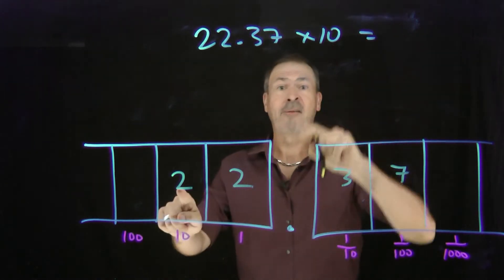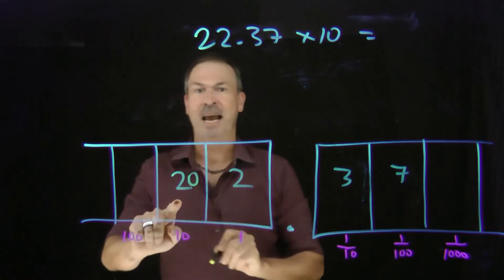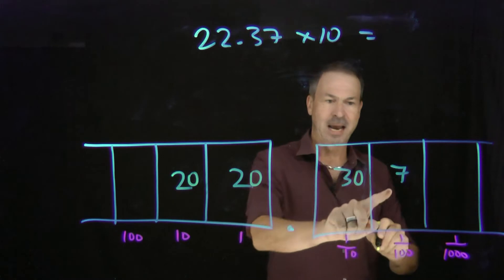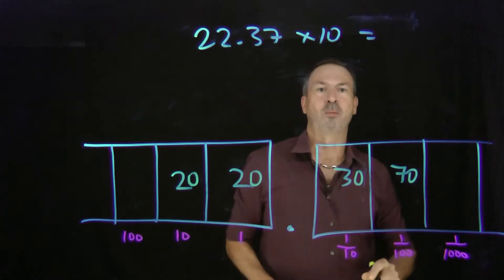Scale everything up by 10, please. So it's having 2 tens and then I'll have 20 tens. It's having 2 units and then I'll have 20 units. 3 tenths become 30 tenths and 7 hundredths become 70 one-hundredths.